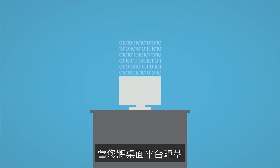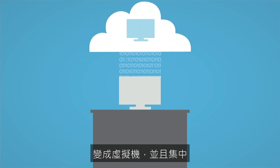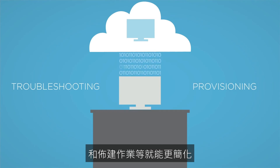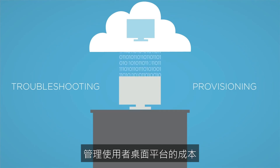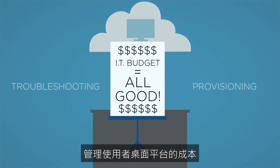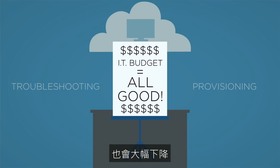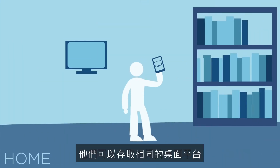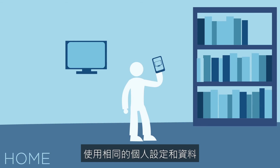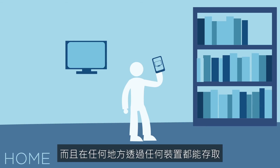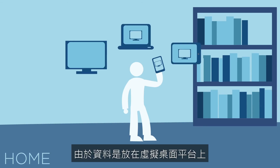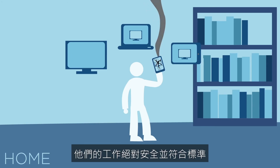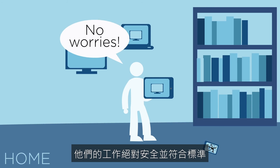When you take your desktops and transform them into virtual machines and centrally host them on your data center, things like troubleshooting and provisioning are simplified, and the cost of managing each user's desktop goes way, way down. This makes for a great user experience too, since they access the same desktops with the same personal settings and data from any device anywhere. And since their data is on a virtual desktop and not on the device itself, you have the peace of mind that their work is secure and compliant.